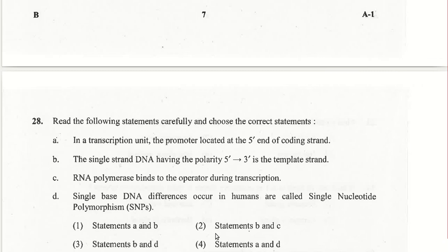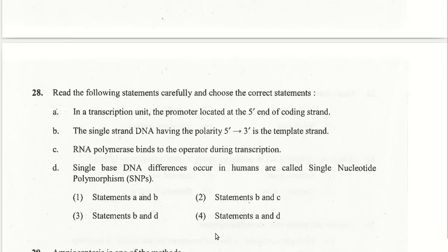For question 28, evaluating statements about a transcription unit: the promoter is located at the 5' end of the coding strand — correct. The single-strand DNA with polarity 5' to 3' being the template strand — wrong. RNA polymerase binding to the operator during transcription — wrong. Single nucleotide differences in humans are called SNPs — correct. Statements A and D are the correct statements.